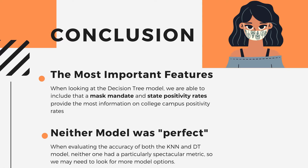To conclude, when looking at the decision tree model, we found that mask mandate and state positivity rates provide the most information on college campus positivity rates. This isn't to say that teaching modality and county positivity rates didn't provide information — just that mask mandate and state positivity rates provided the most. We also want to reiterate that neither model was perfect: when evaluating the accuracy of both the KNN and decision tree models, neither had a particularly strong MSE metric, so we may need to look for more model options.